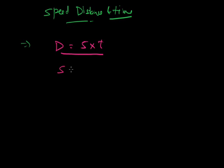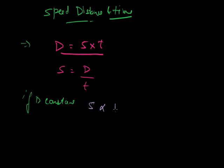Speed is distance upon time. Now, if I take particular cases, let's say if D is constant — if distance is constant, then speed is inversely proportional to time. Inversely proportional means whenever I decrease the speed, time will decrease, or whenever I decrease the speed, time will increase.